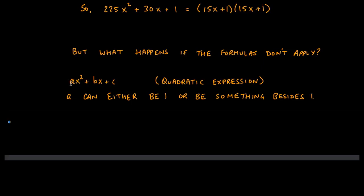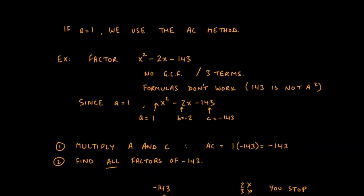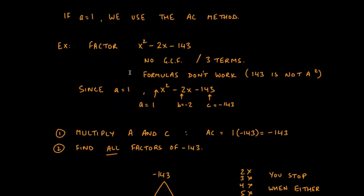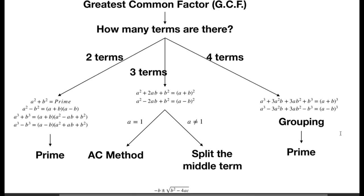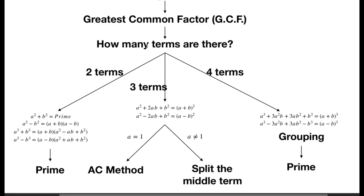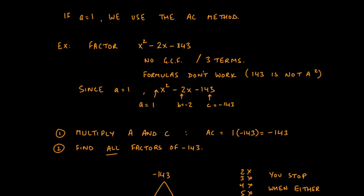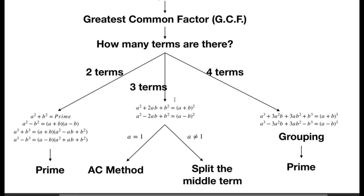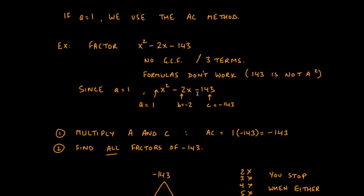If a happens to be 1, we can use the AC method. Let's look at this example: factor x² - 2x - 143. We go through our decision tree — one of the coefficients is 1, so there is no GCF. We have three terms. The formulas are not going to work here because 143 is not a perfect square, and the signs don't match the required pattern since the last term is negative.